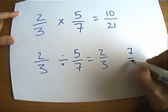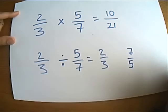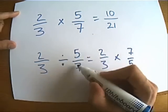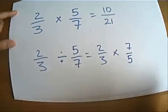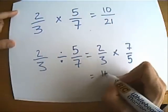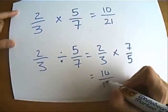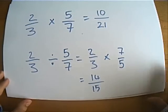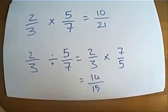and I'm going to multiply. So I'm going to flip the second fraction, instead of dividing I'm going to multiply, and that's going to give me 14 over 15. Can I simplify it? No, I'm going to leave it as it is.